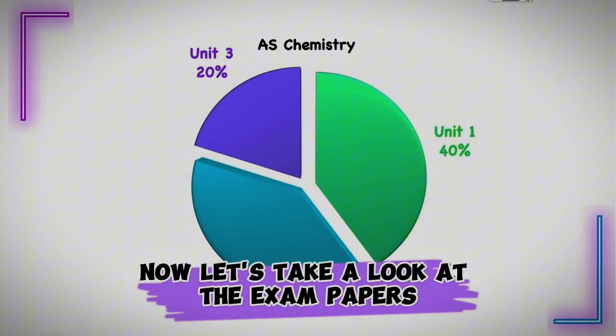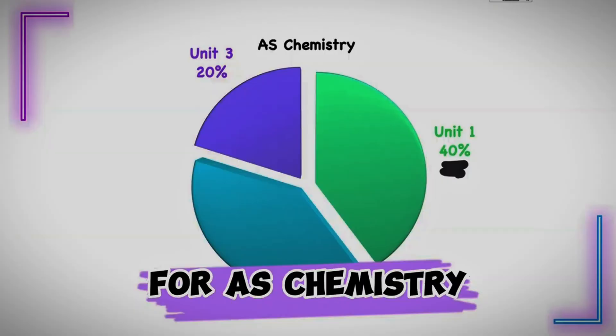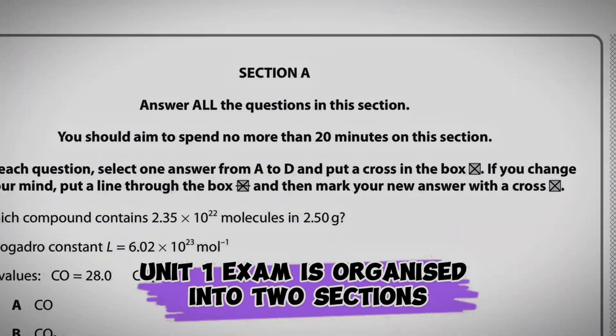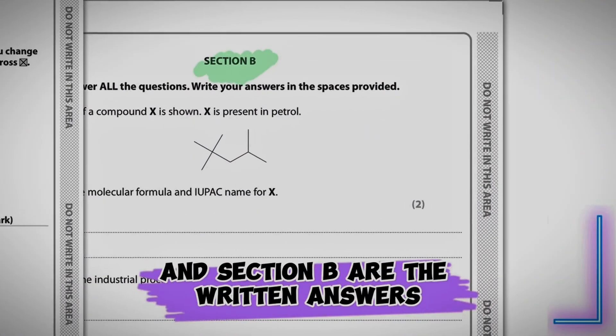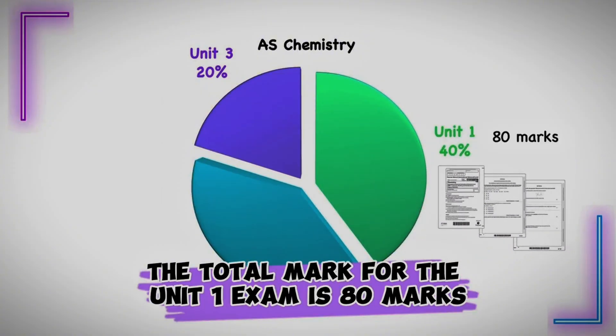Now let's take a look at the exam papers. Unit 1 exam is worth 40% of your overall for AS chemistry. Unit 1 exam is organized into two sections. Section A is the multiple choice questions and section B is the written answer. The total mark for the unit 1 exam is 80.